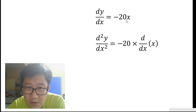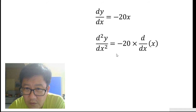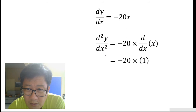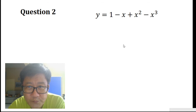Now we try and obtain our d squared y dx squared. That equals minus 20 times d/dx of just x, because x is what remains. When we differentiate x, we get a 1. So tidying all these things up, we get minus 20. So d squared y dx squared equals simply minus 20 — just a constant.